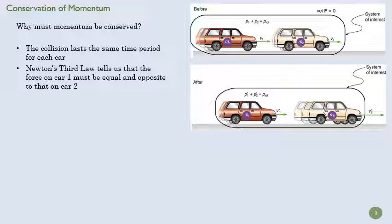Newton's third law tells us that the force that car one puts on car two has to be equal and opposite to the force that car two places on car one. So you see where we're going here, right? The delta T has to be the same. And the force has to be equal and opposite.